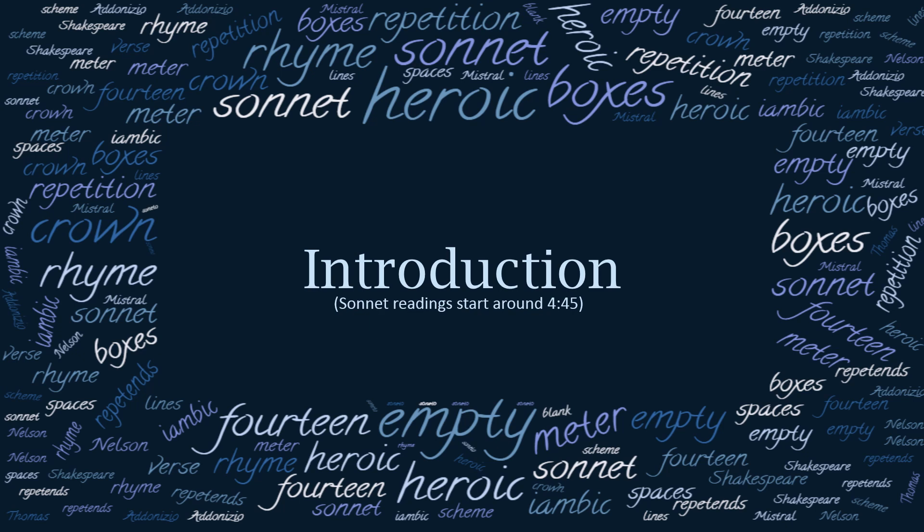Before I started in on the creation of my crown, I conducted some research on the form's history and popular variants. Kim Addonizio's 2009 book Ordinary Genius provides background on the building blocks of the crown, the individual sonnets. Taken from the Italian for "little song," the sonnet shares similarity to an eight-line Sicilian song form called the Strambotto, the form Addonizio speculates a poet added six lines to in the 13th century.